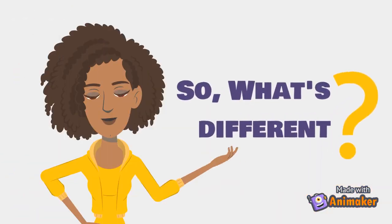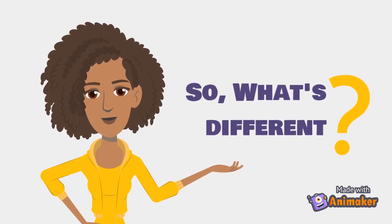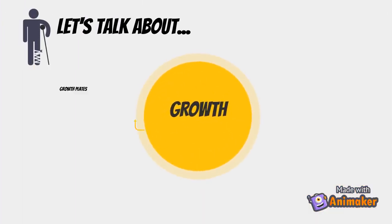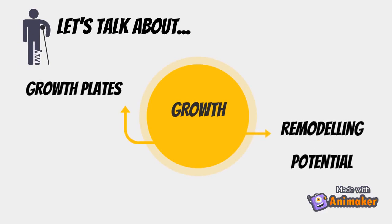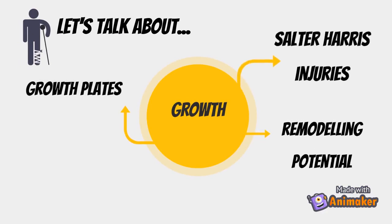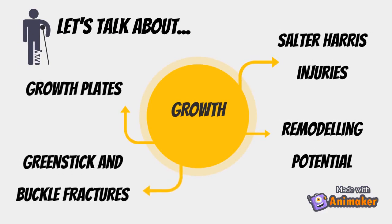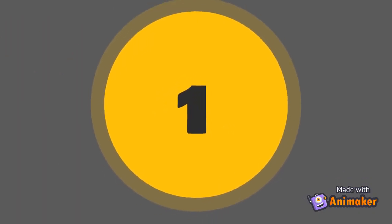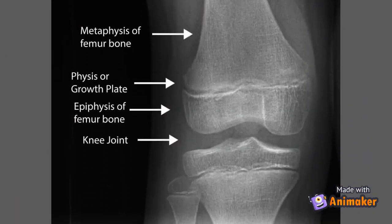So how do pediatric x-rays differ from adult x-rays? Children are still growing whereas adults are not, and because of this there are the following main differences. Number one: children possess growth plates, also known as physis, in their bones, and these can be mistaken for fractures. So a contralateral x-ray is useful if uncertain.